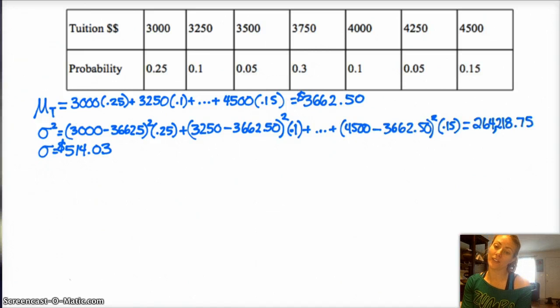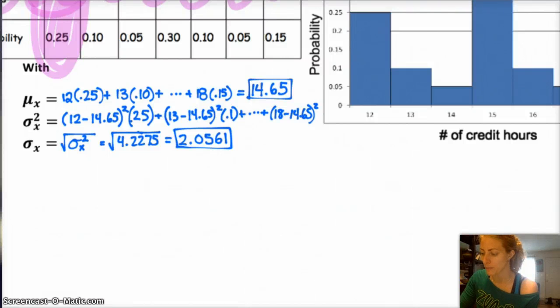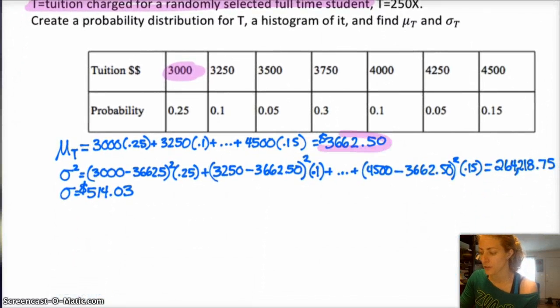And if you do it the way that you think you should, which is like, alright, we multiplied all of our x values by 250 to get our t values, and then, so we should just multiply our mean by 250. So our old mean was 14.65. If you multiply that by 250, you should get $3,662.50.